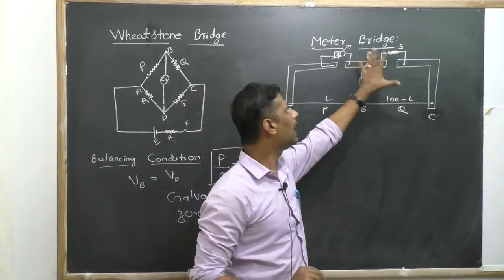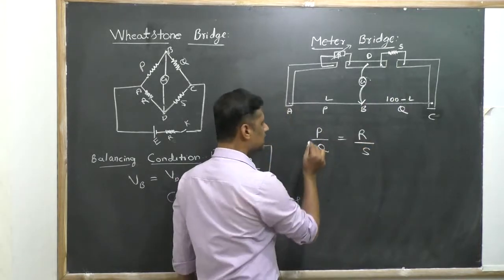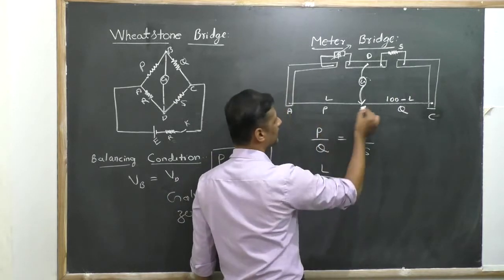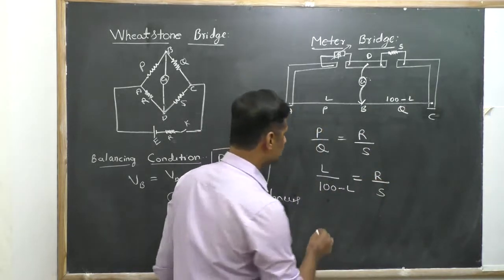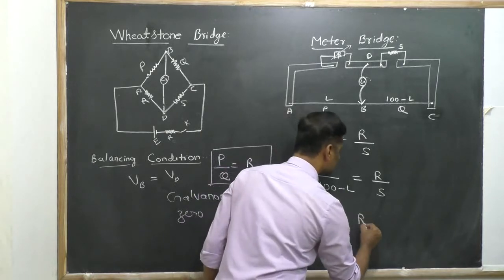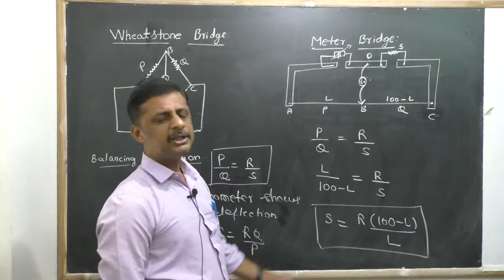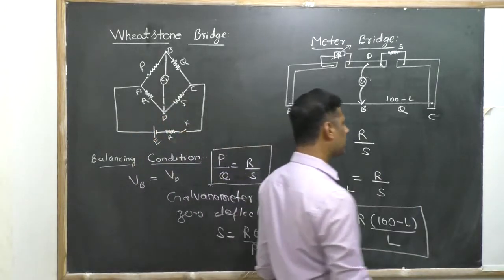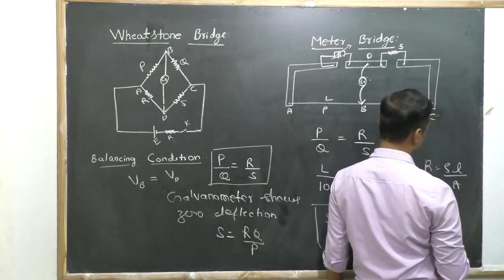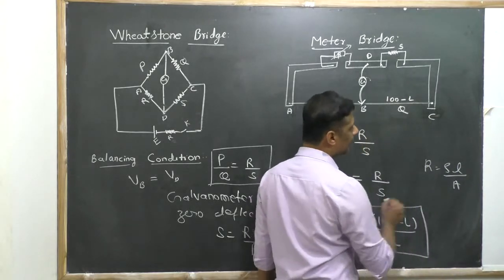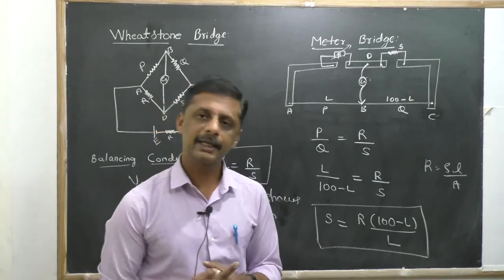The four resistors are P, Q, R, and S. The balancing condition is P by Q = R by S. Since resistance P corresponds to length L and resistance Q corresponds to length (100 − L), the formula for unknown resistance becomes S = R × (100 − L) / L, where R is the known resistance and L is the balancing length. Once the resistance is found, you can calculate resistivity using R = ρL/A, with the known length and area of cross-section of the wire.